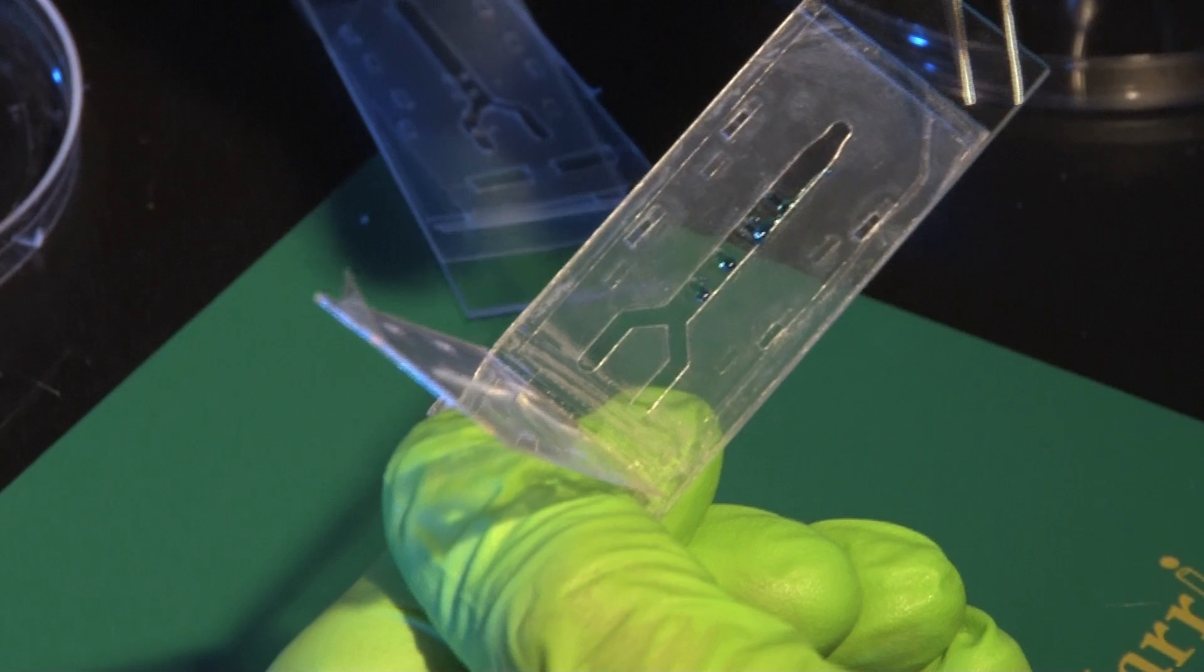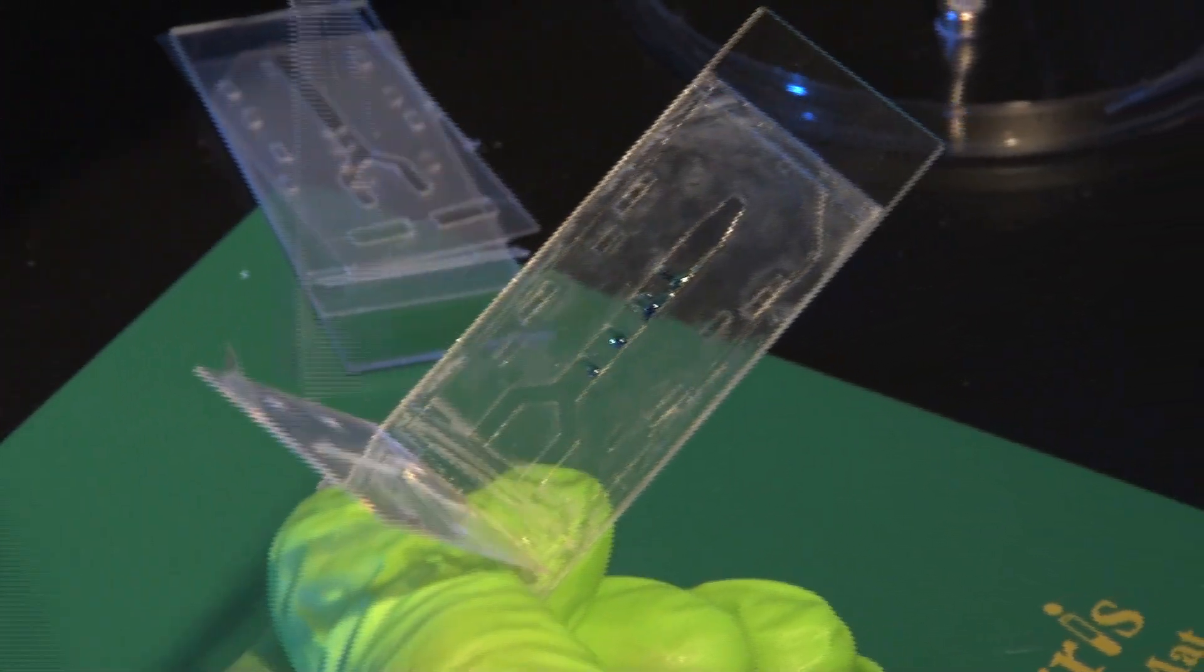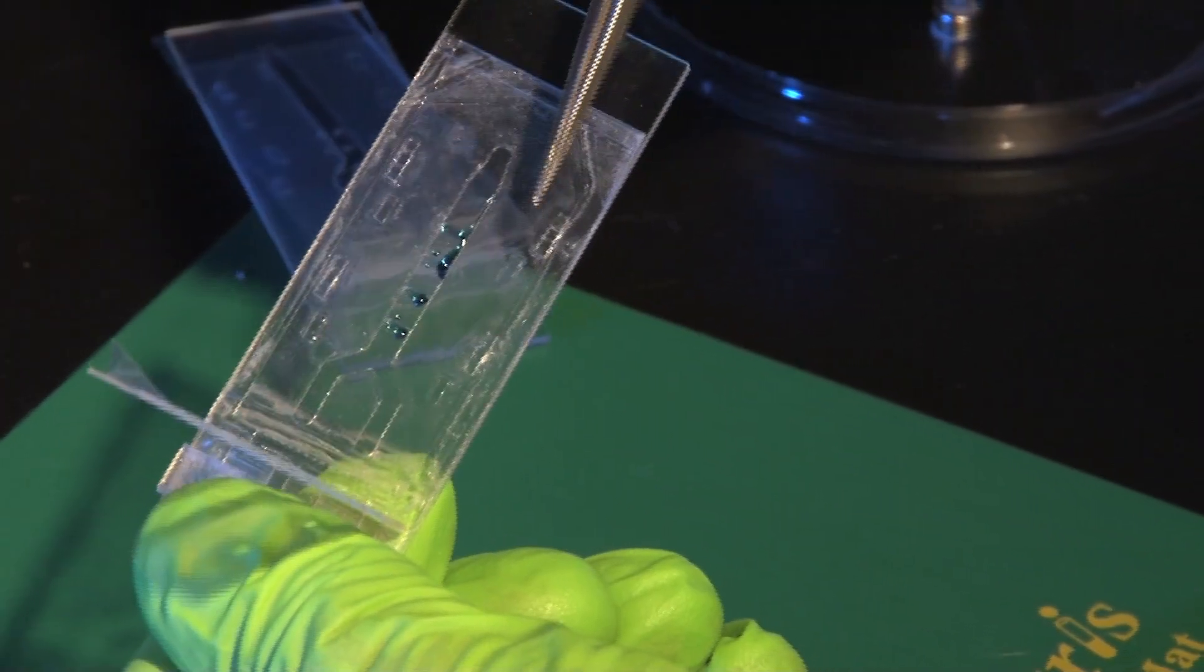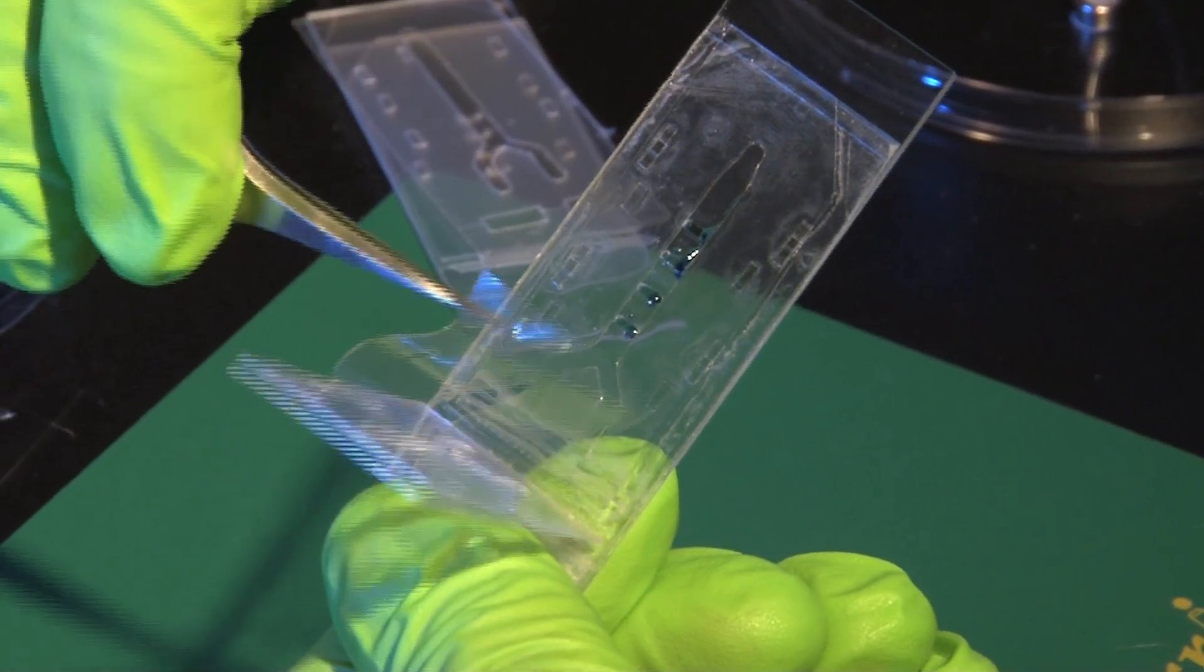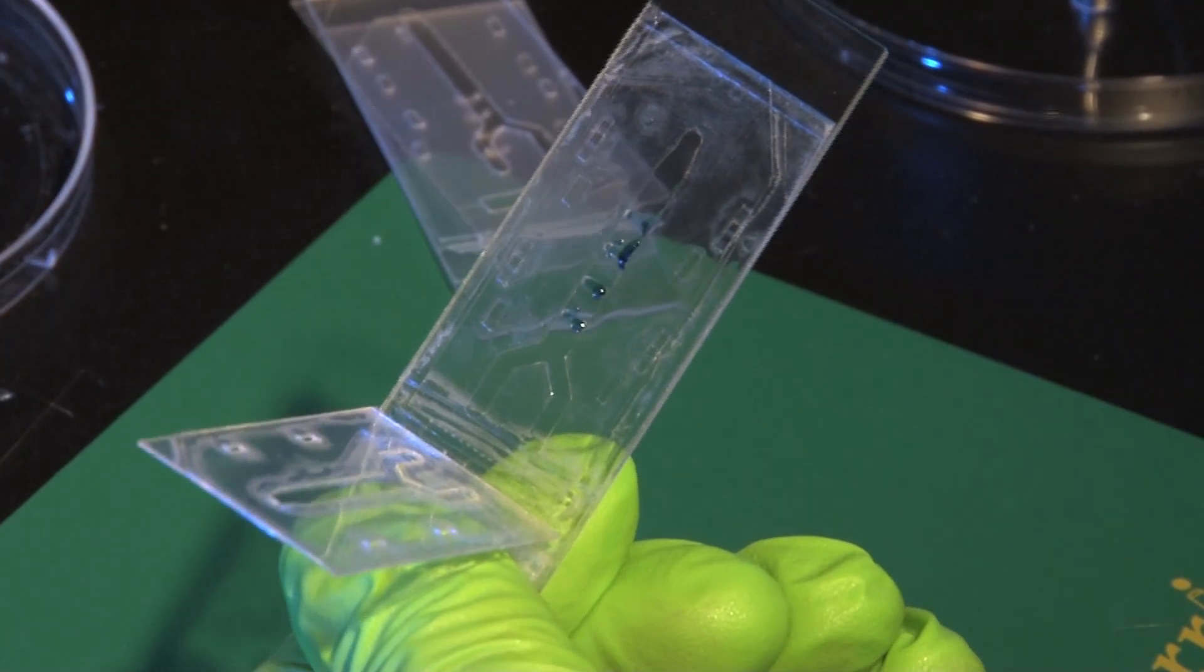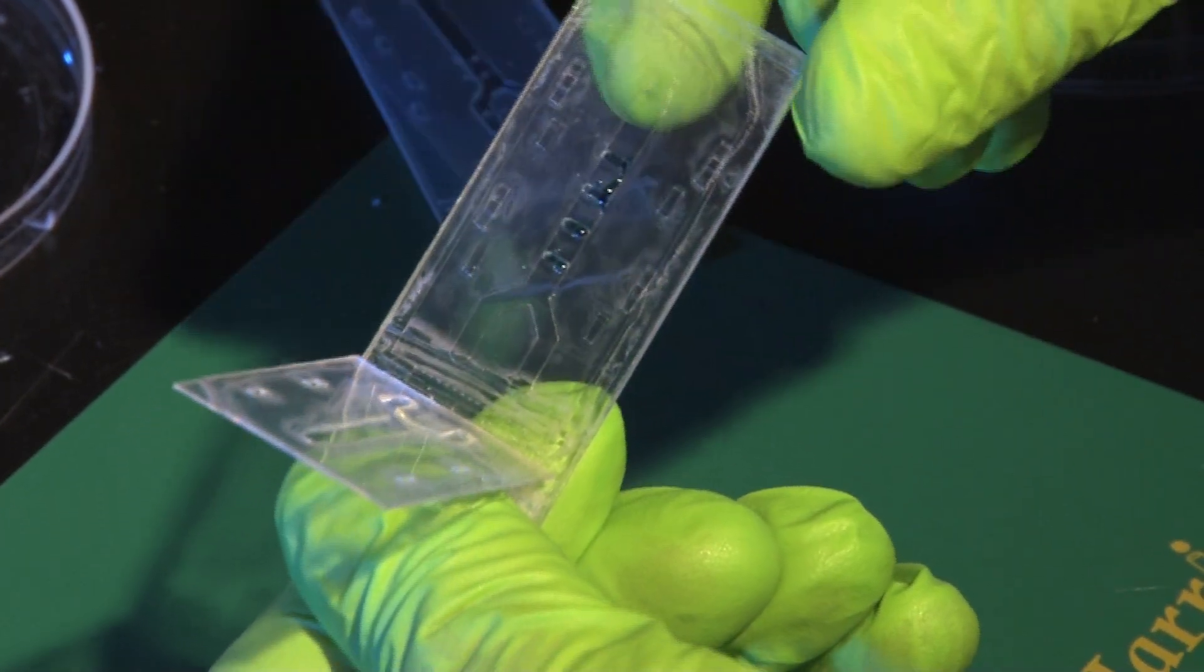At this point I take this liner out and then it exposes here this sticky double sided tape. I do the same on the lid. I just take the liner out and now I'm going to close it.